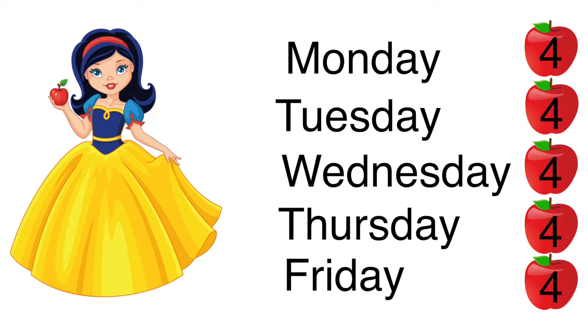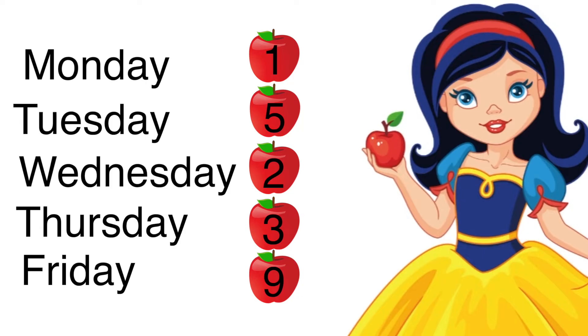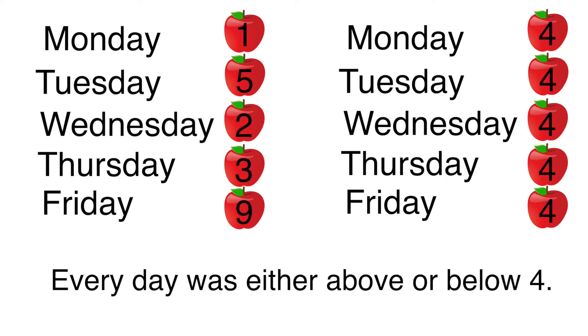The visual on the right shows that this person ate an average of four apples a day. Notice that even though it's correct to say that the person ate an average of four apples a day, in reality they never ate four apples on any one of those days. Every day was either above or below four.